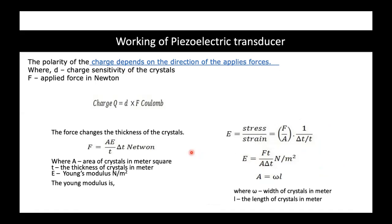The Young's modulus E is defined as stress over strain. Stress is force over area, and strain is ΔT over T, which leads to E = FT / (A·ΔT), or equivalently F = AE(ΔT/T). Substituting this into the charge equation, we get Q = d·A·E·(ΔT/T).